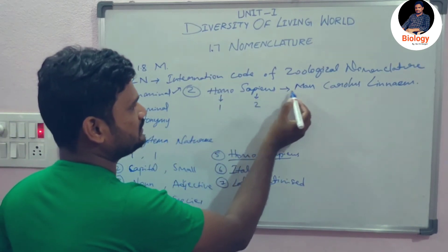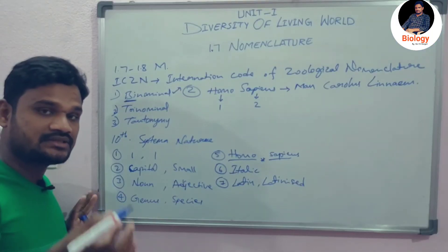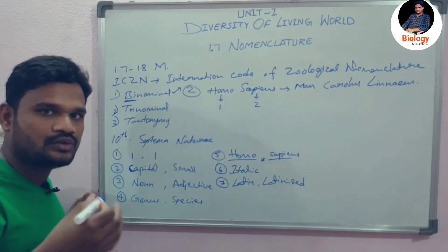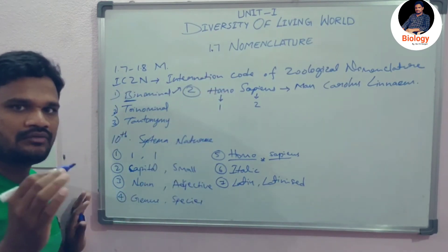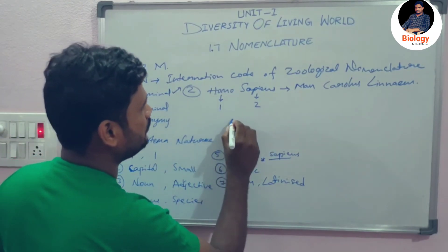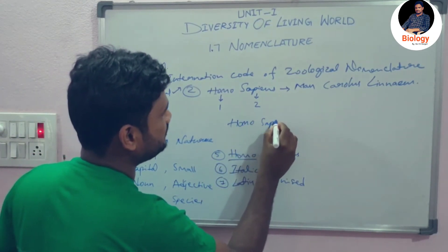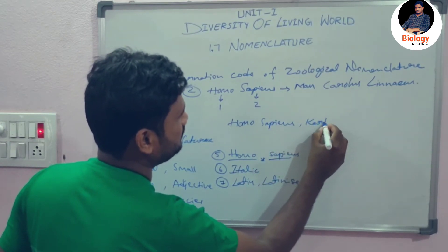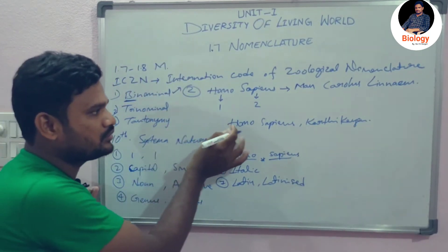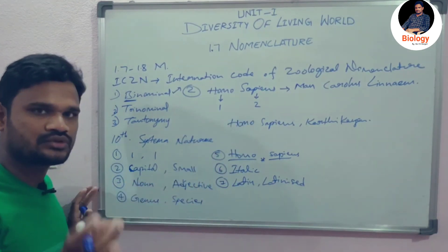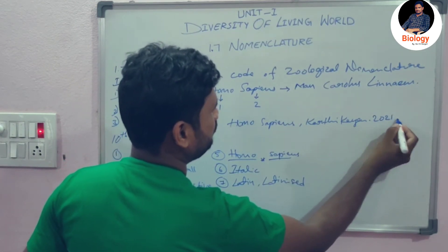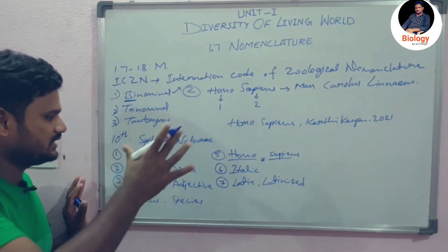Homo sapiens is the scientific name of a man. If the scientist who discovered that particular organism wants to be credited, we place their name after the species name — for example, Homo sapiens, Karthikeyan. And if we want to place the year it was coined, we write Homo sapiens, Karthikeyan, 2021. These are the rules of binomial nomenclature.